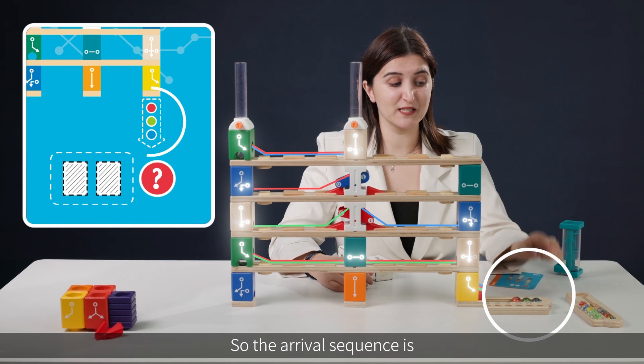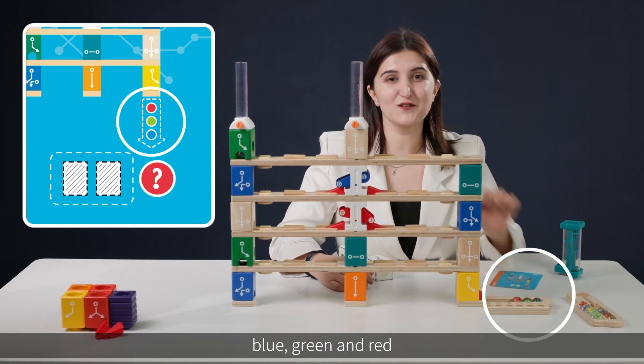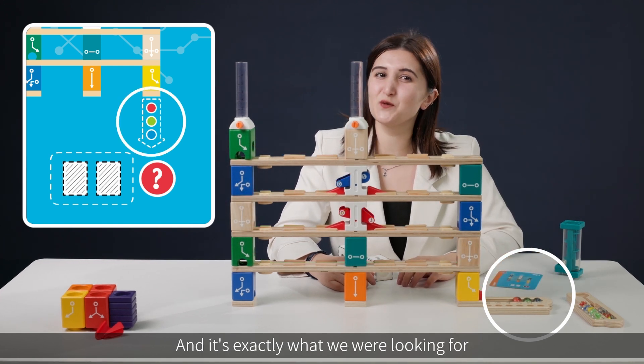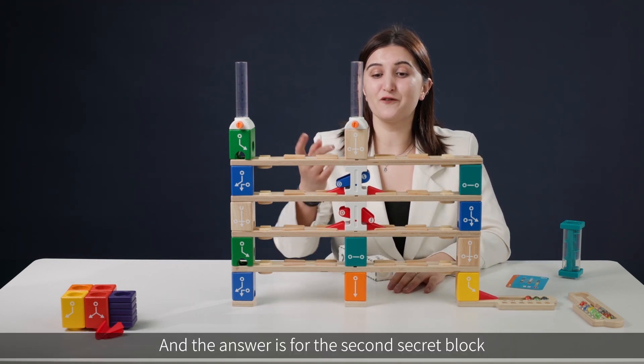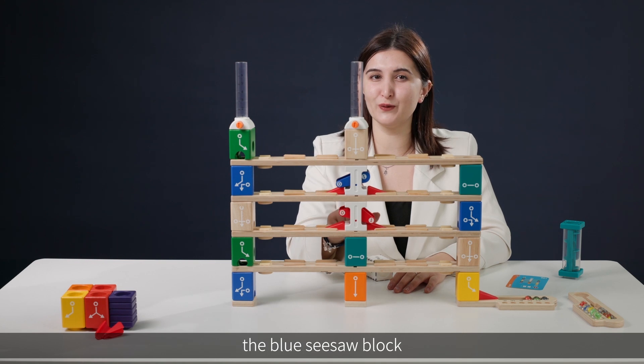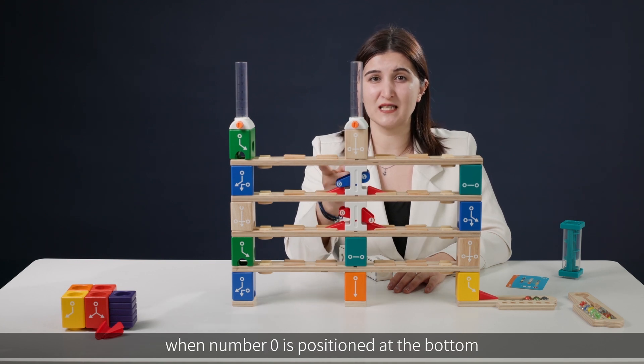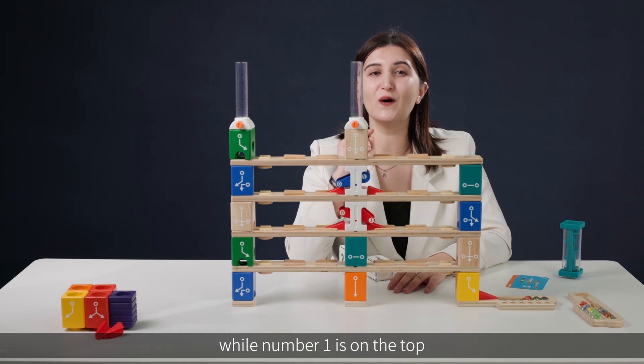So the arrival sequence is blue, green and red. And it's exactly what we were looking for. So we did it. And the answer is for the second secret block, the blue seesaw block, where number zero is positioned at the bottom while number one is on the top.